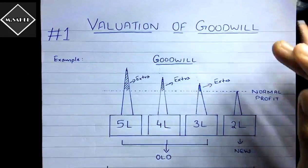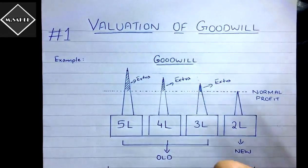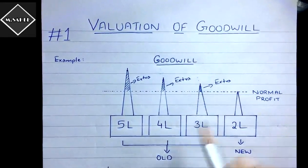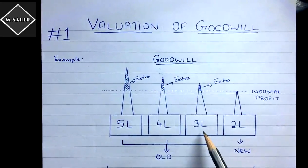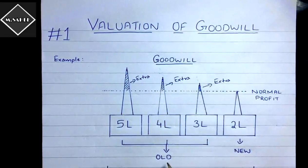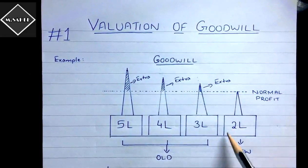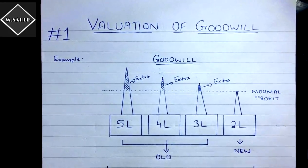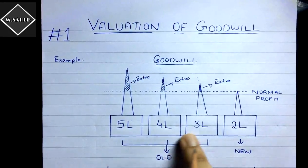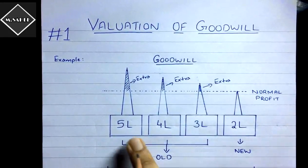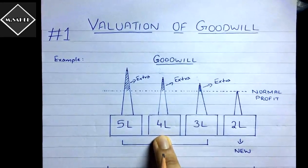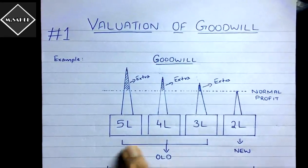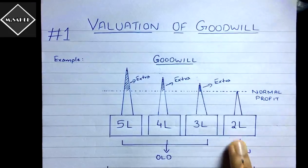First we need to understand the concept of goodwill. Let's take a small example. Let's say in a street there were four shops — first, second, third, and fourth. The first three shops are old shops, in business for 10 years, while the fourth shop is a new shop, open for only a year. The first shop earned a profit of five lakh, the second four lakh, the third three lakh, and the new fourth shop made a profit of two lakh in its first year.